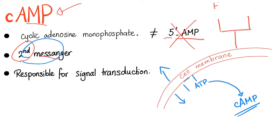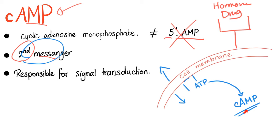For instance, it could be a hormone acting on the receptor, a drug acting on the receptor, it could be paracrine, juxtacrine, endocrine — whatever. Something is happening to this receptor. This is called the primary messenger, which will trigger a cascade called the secondary messenger, and then cyclic AMP will do whatever you want it to do.